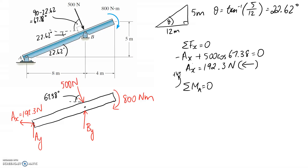I'm going to consider the anti-clockwise direction as positive. The first term is By times the distance back to point A, which from the line of action here is going to be 8 meters. By is trying to push us in an anti-clockwise direction about point A, so that's positive. For the 800 newton meter moment on the end, it doesn't need to be multiplied by distance — we just consider the direction. It's going clockwise, so it goes in as negative 800.